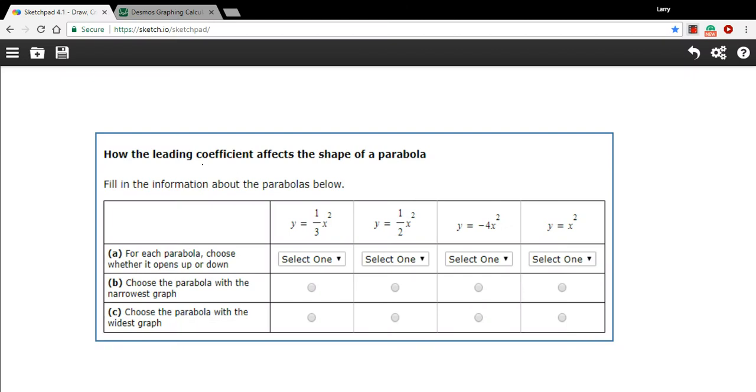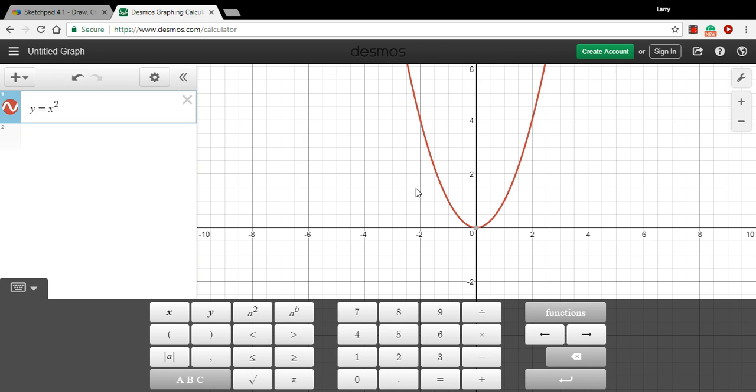Here we have some questions about how the leading coefficient on a quadratic affects the shape of the parabola. I thought maybe we'd use a graphing calculator here. I've got desmos.com just to experiment with this. So here's our basic function, y equals x squared, and you can see you have your typical upward opening parabola shape here.